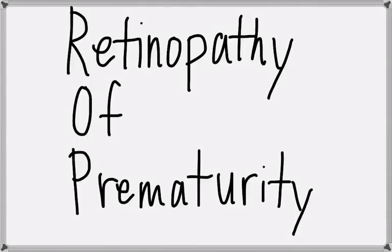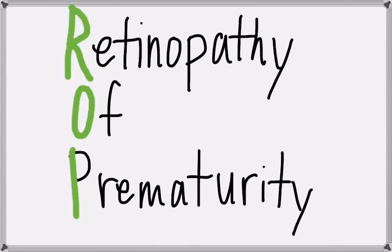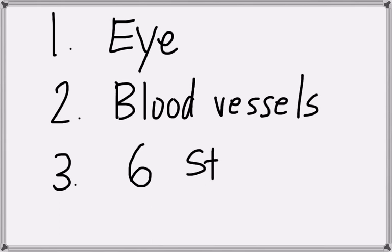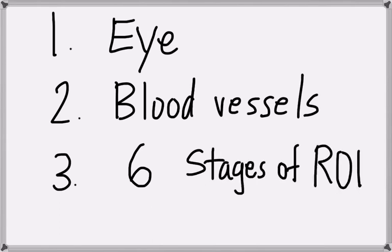In this video, I will talk about retinopathy of prematurity or ROP. First, I will draw a picture of the eye. Second, I will talk about what happens when blood vessels in the eye do not develop naturally. Third, I will talk about the six stages of ROP.